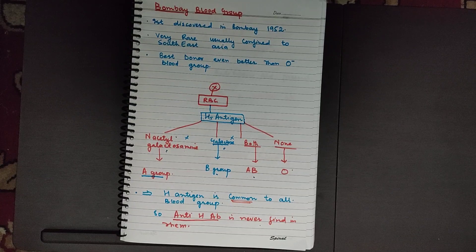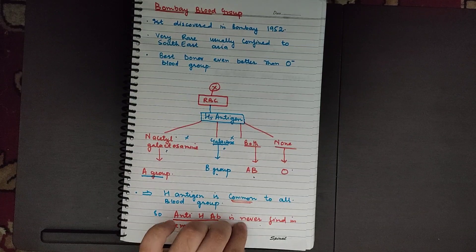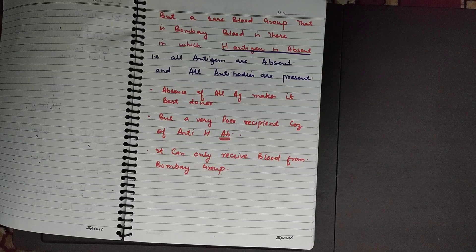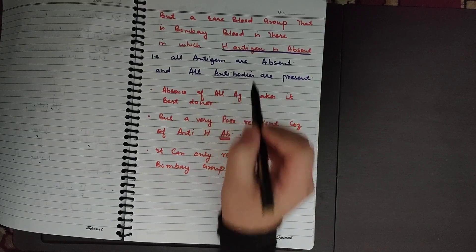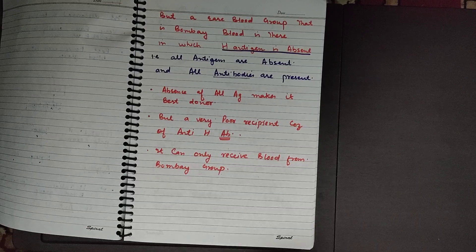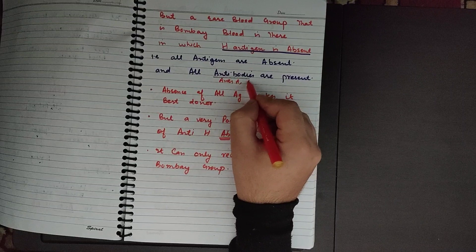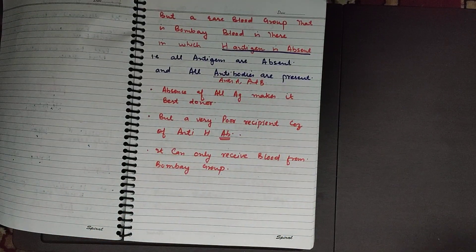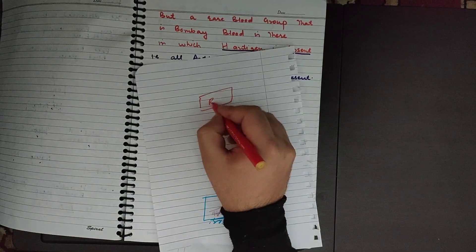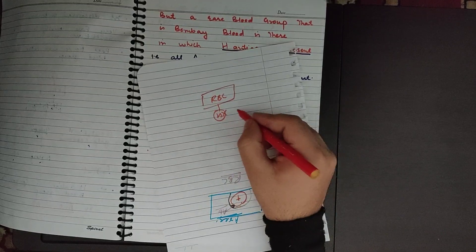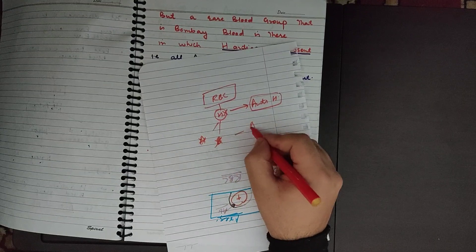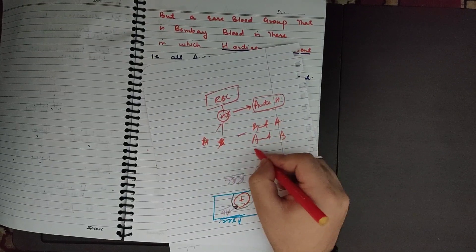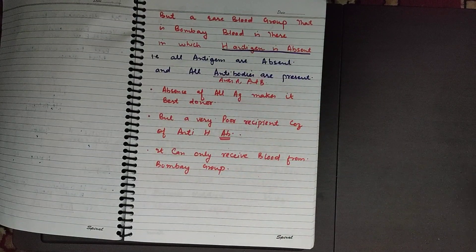The Bombay blood group is a very special blood group in which H antigen is absent. Because H antigen is absent, the plasma will have a characteristic anti-H antibody. Along with anti-H, the plasma will also have anti-A and anti-B antibodies. So all three antibodies — anti-H, anti-A, and anti-B — are present in the plasma of a Bombay blood group person.